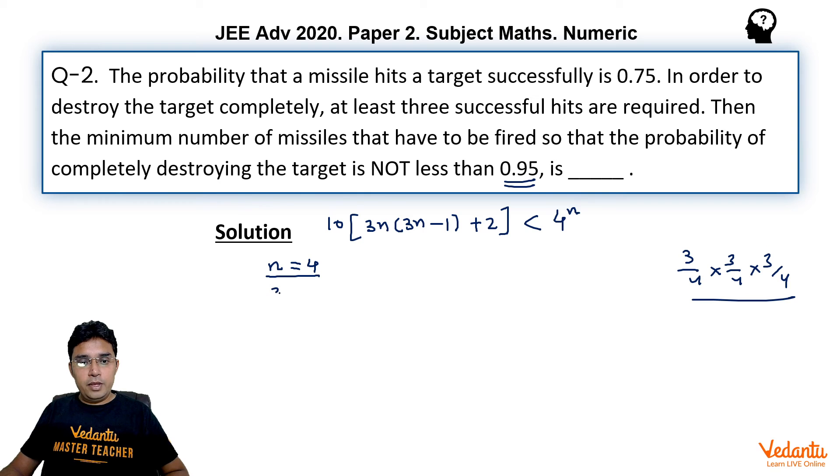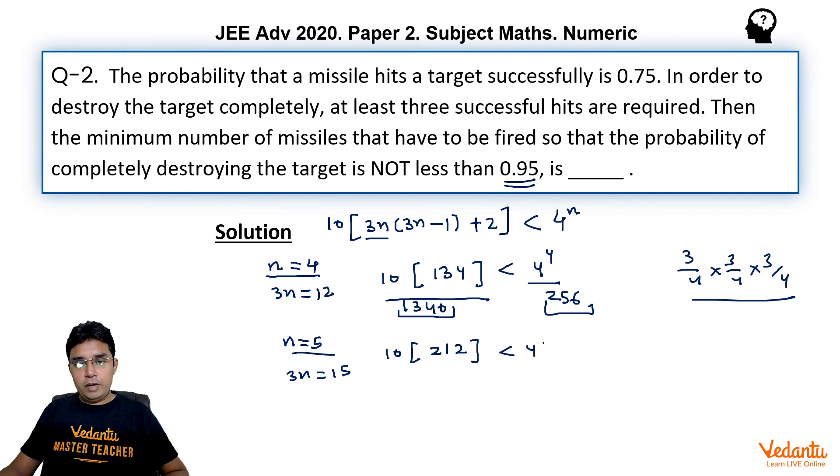So let us start with n is equal to 4. If n is equal to 4, 3n will be equal to 12, so your left hand side will become 10 into 12 into 11 that is 132 plus 2, so 1340. I think we are not getting the result for n is equal to 4 because here we have 1340 on the right hand side it will be 4 power 4 is 256 and this is 1340, so not possible. Now if I put n is equal to 5, your 3n will be equal to 15, so if you put it we get 10 into 15 into 14 that is 210 plus 2 that is 2120 and less than 4 power 5. So your left hand side is 2120 and on the right hand side you will have 1024. I think this is also not correct.